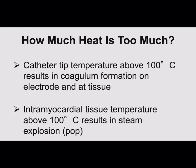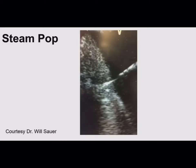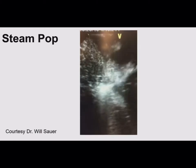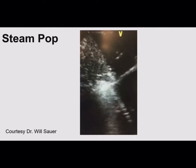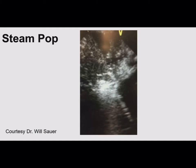The reason you don't want to heat above 100 degrees: one, you start to get coagulum or clot on the tip of the catheter, limiting your ability to heat the tissue. Second, above 100 degrees you're essentially boiling the water in the tissue, and if you do that inside the tissue, you get what's called a steam pop. This is in a swine left ventricle — what's happening is you're heating the water deep inside the endocardium, that water boils, there's nowhere to go, and that steam expanding results in a mini explosion.